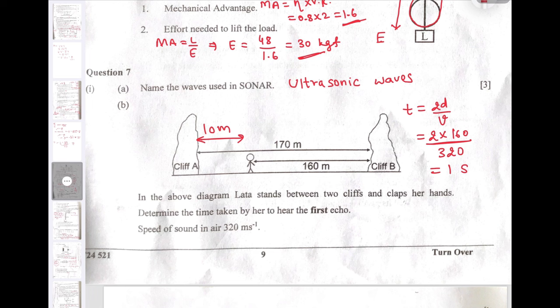7b says in the diagram above, Lata stands between two cliffs and claps her hands. Determine the time taken by her to hear the first echo. Be careful here: Lata is standing at distance 10 meter only from cliff A. So Lata will not be able to hear the echo from cliff A because the distance is just 10 meter, whereas the minimum distance requirement for echo to be heard is 17 meter at least. The first echo will definitely come when the sound reflects from cliff B. Using that fact, T equals 2D upon V, we get time 1 second. After 1 second, Lata will hear the first echo.